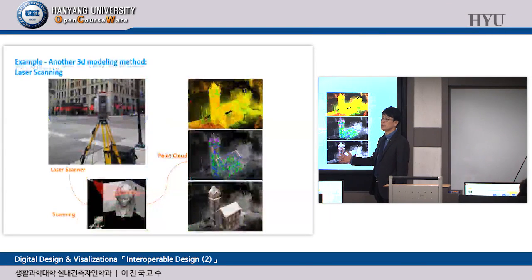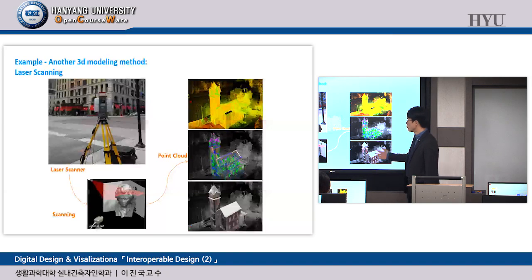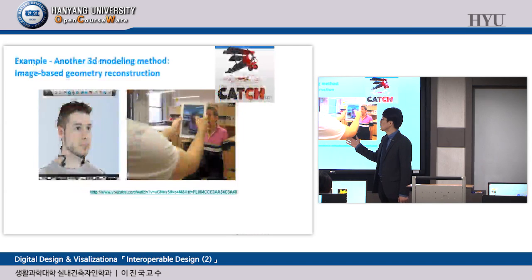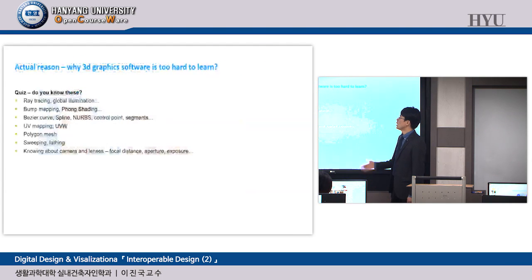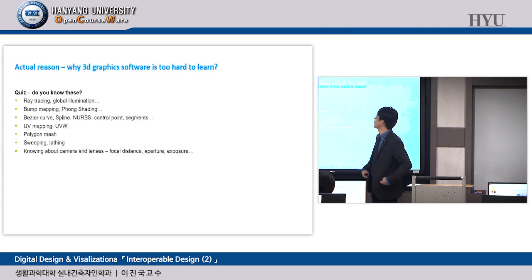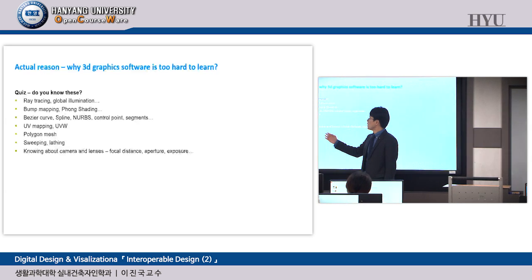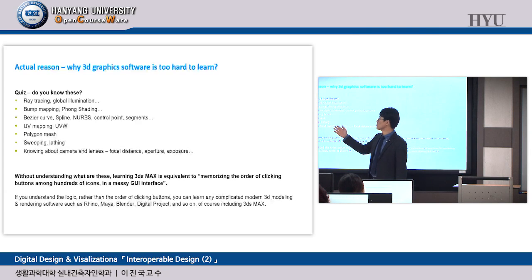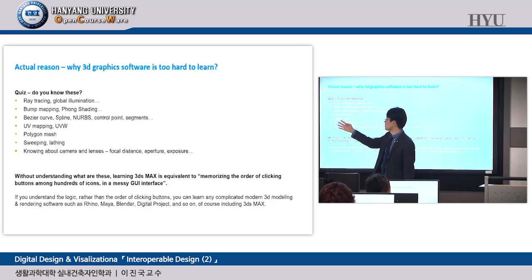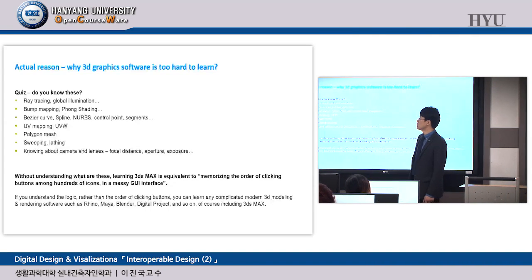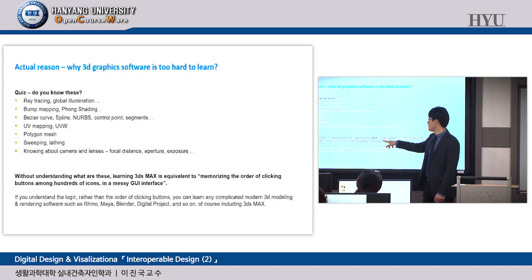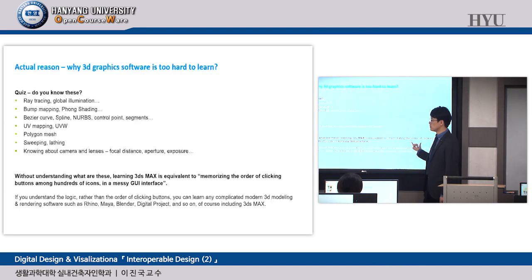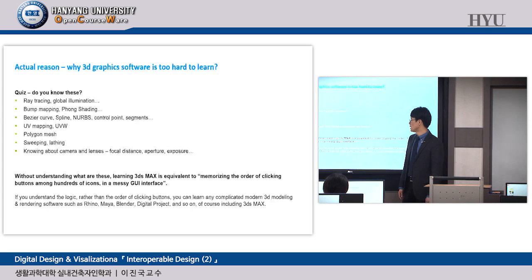3D Max has a complicated interface with too many buttons, icons, and options. Interaction is typing, clicking, drag-and-drop, and keystrokes — a GUI. There is also command-line interface and NUI for smartphones and touchpads. Most 3D computer graphics tools are GUI-based, while your daily life tools are increasingly NUI-based. This gap makes 3D tools hard to learn. Without understanding concepts like ray tracing, global illumination, final gather, Bezier curves, polygon mechanisms, sweeping, and camera/lens optics, learning 3D Max is just memorizing the order of clicking buttons.